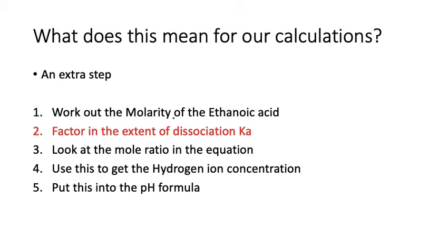Usually, Ka will be given in the question. Then you look at the mole ratio in the equation, use that to get the hydrogen ion concentration, and put it into the pH formula.